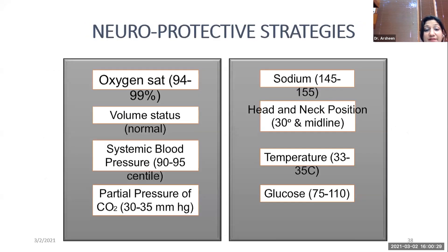Neuroprotective measures should be applied in all patients with brain injury, traumatic or non-traumatic. Target oxygen saturation should be 94 to 99 percent. Keep the patient euvolemic, euglycemic, and maintain euthermia. Systemic blood pressure should be targeted at the 92nd to 95th centile, and the head should be maintained in the midline position.